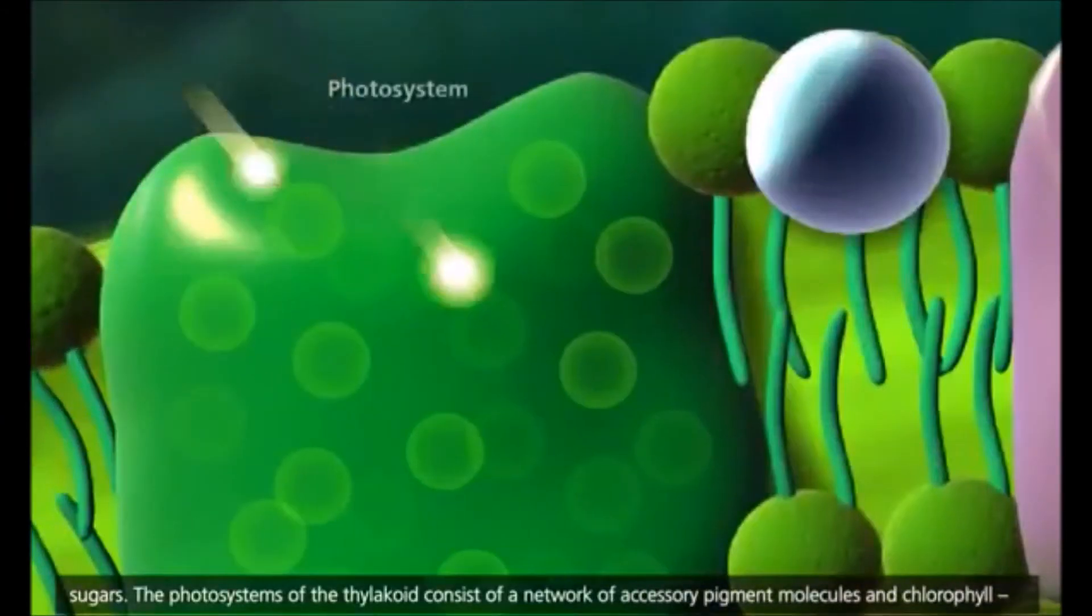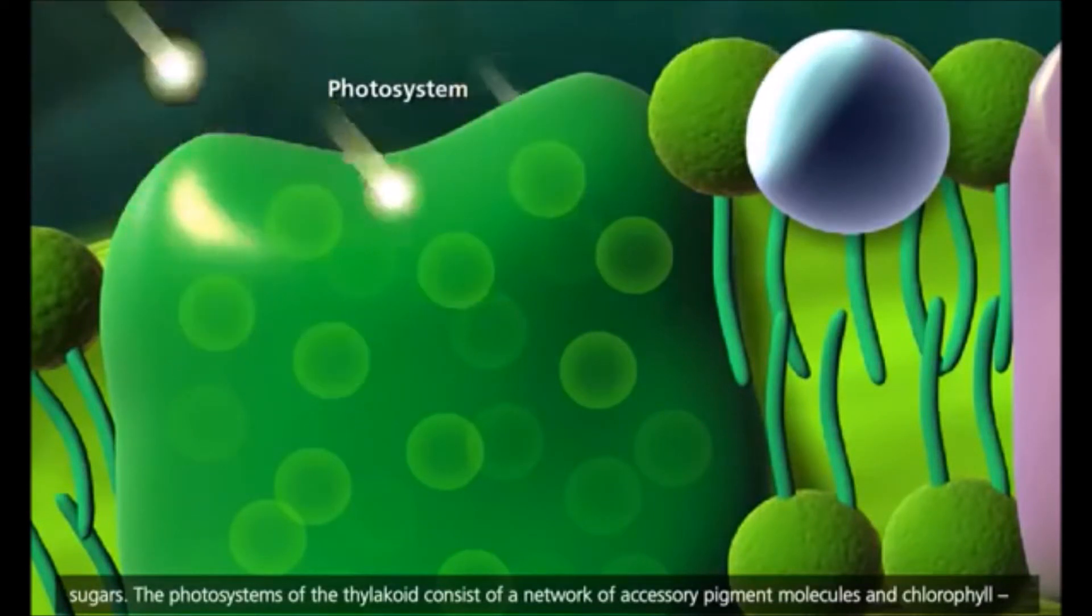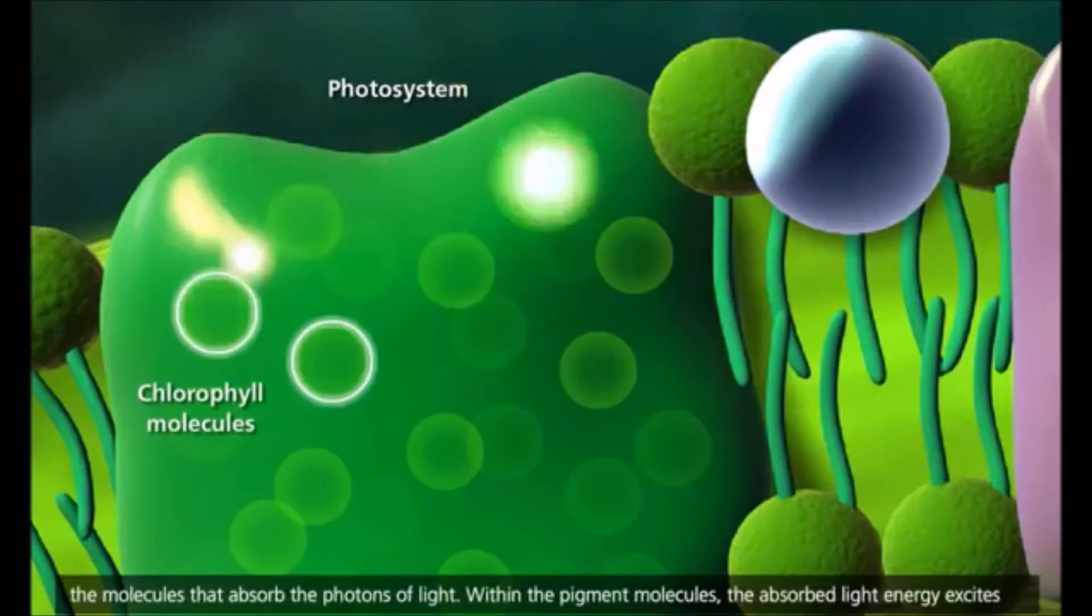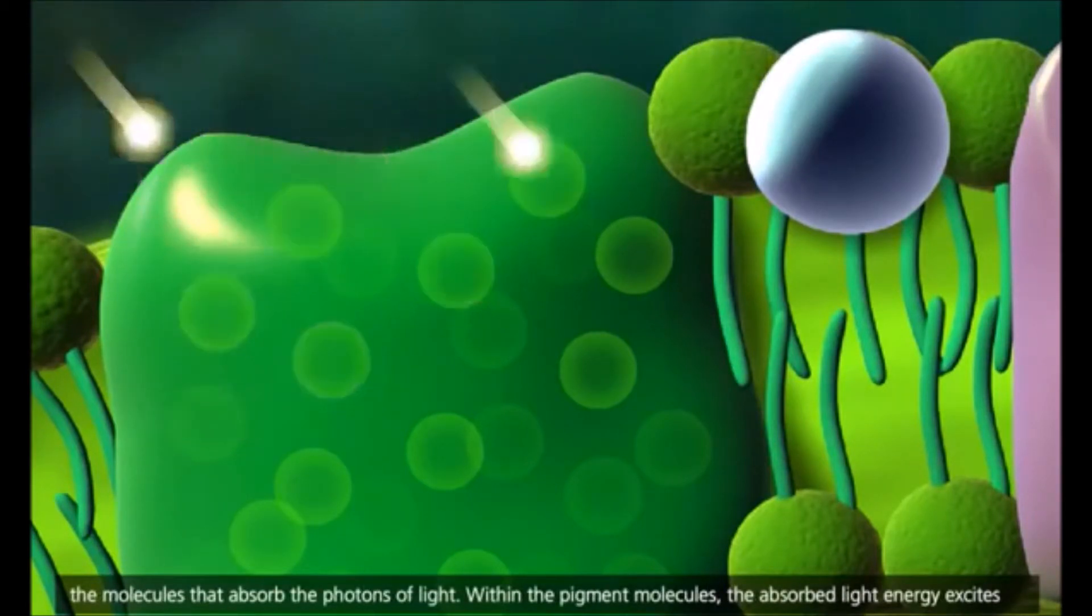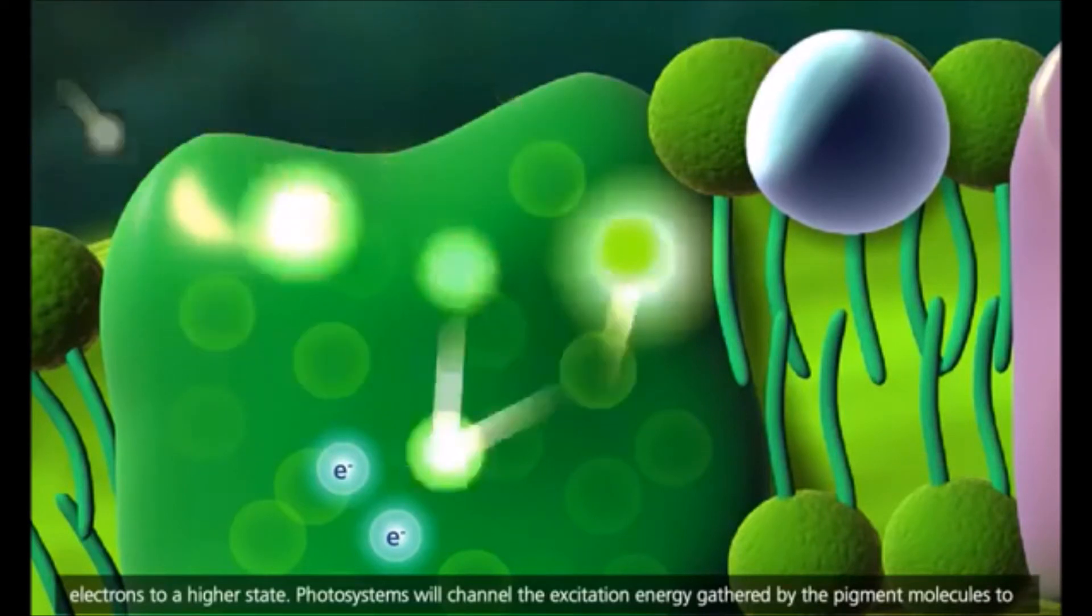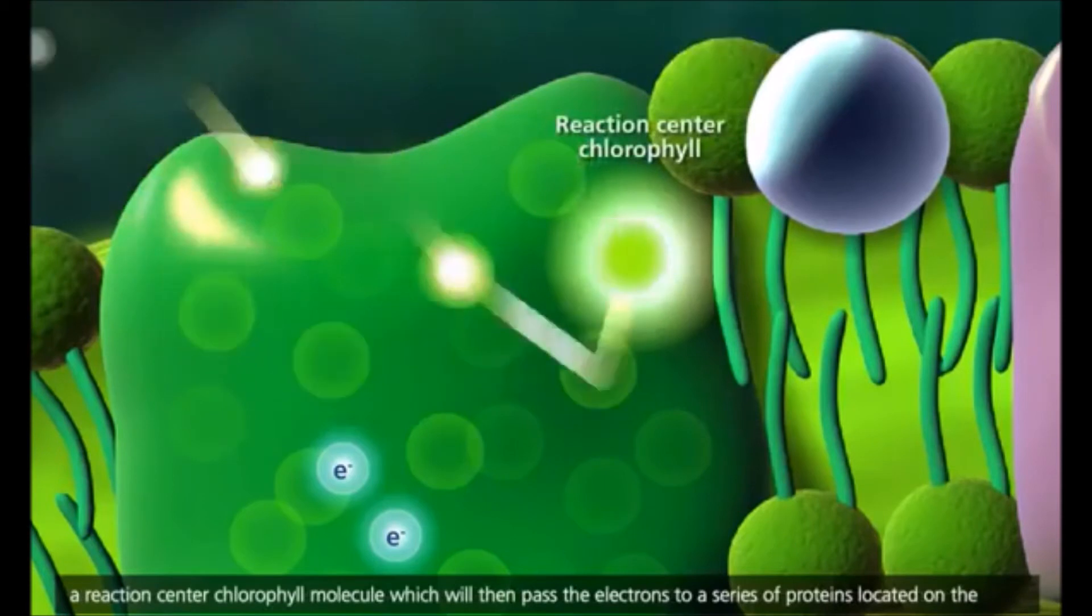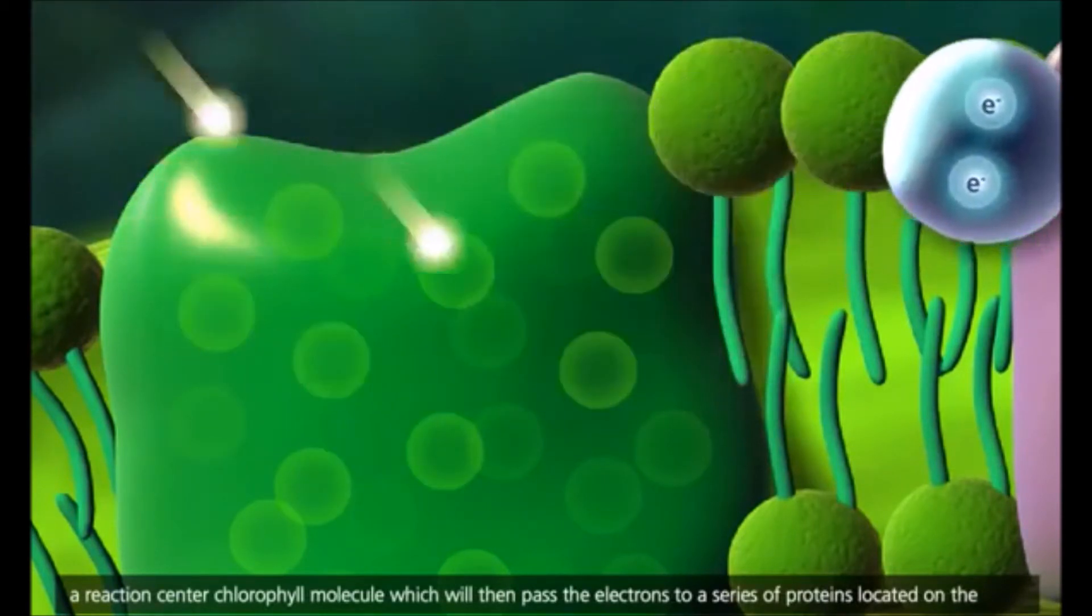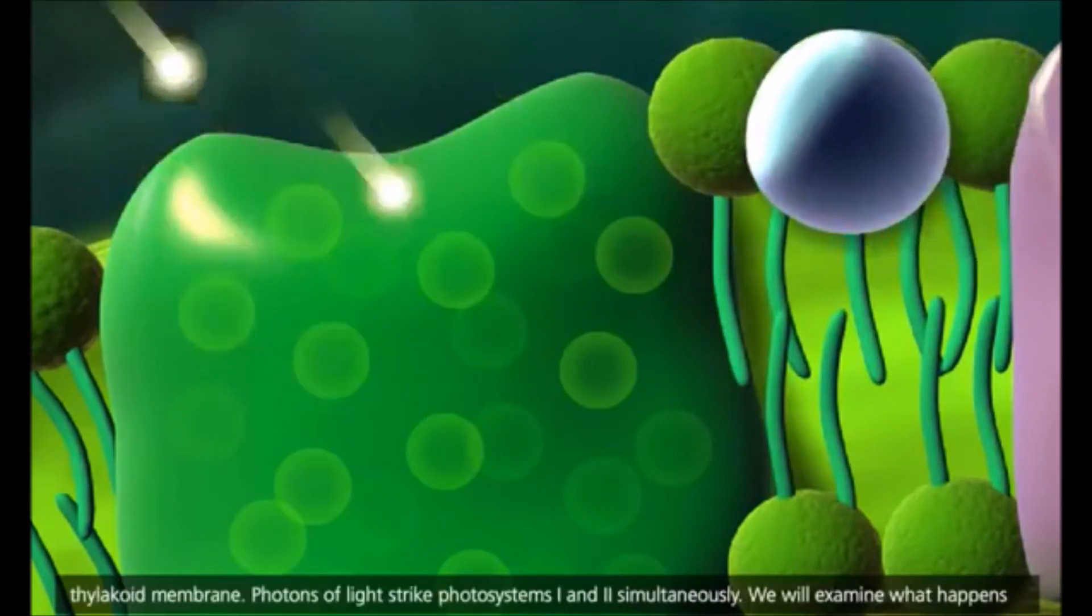The photosystems of the thylakoid consist of a network of accessory pigment molecules and chlorophyll, the molecules that absorb the photons of light. Within the pigment molecules, the absorbed light energy excites electrons to a higher state. Photosystems will channel the excitation energy gathered by the pigment molecules to a reaction-center chlorophyll molecule, which will then pass the electrons to a series of proteins located on the thylakoid membrane.